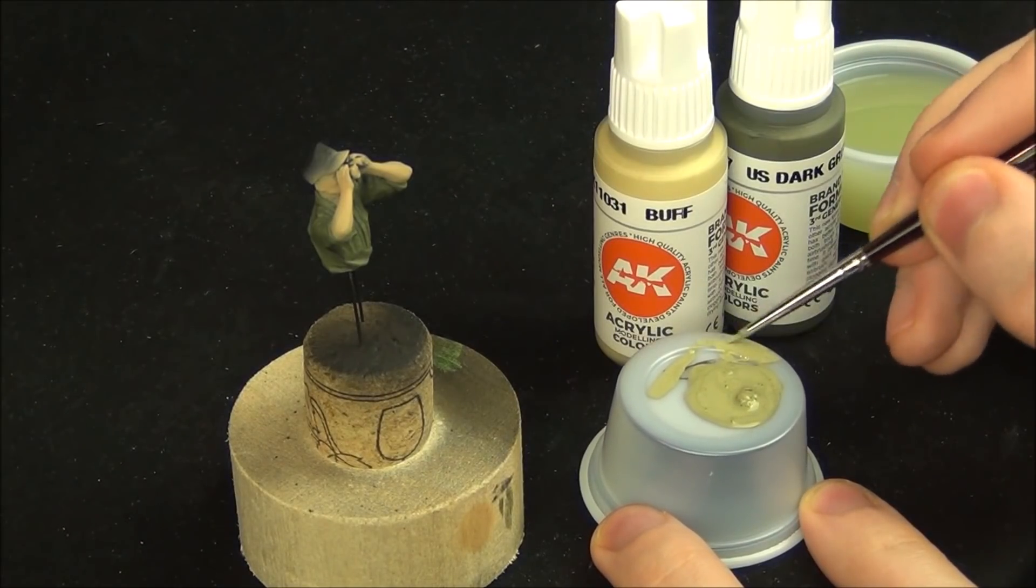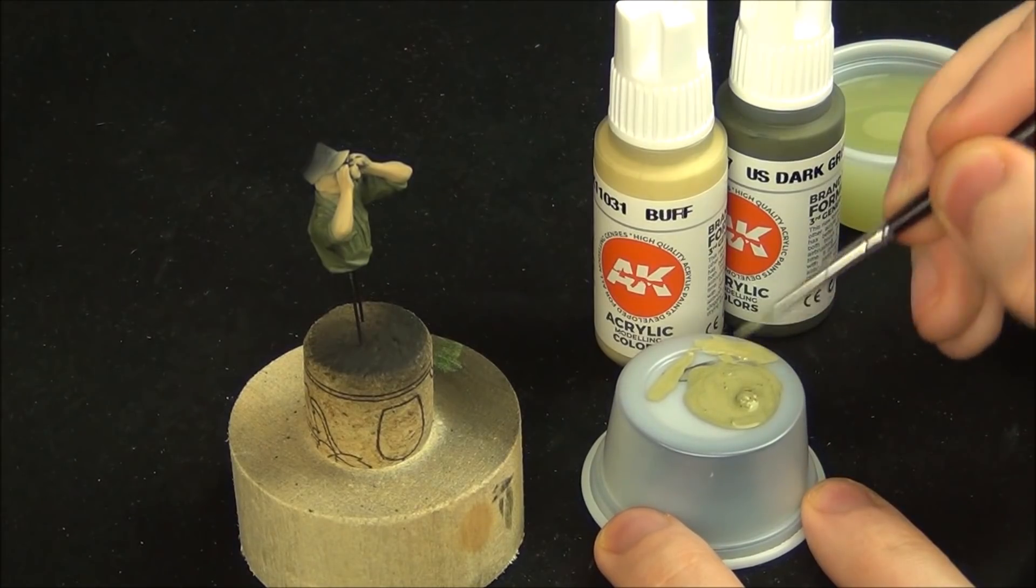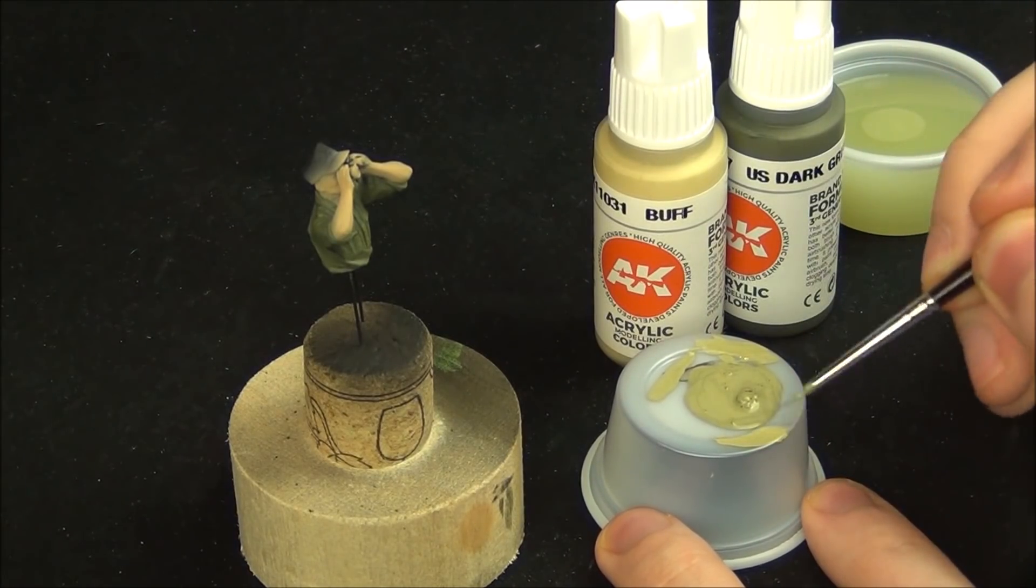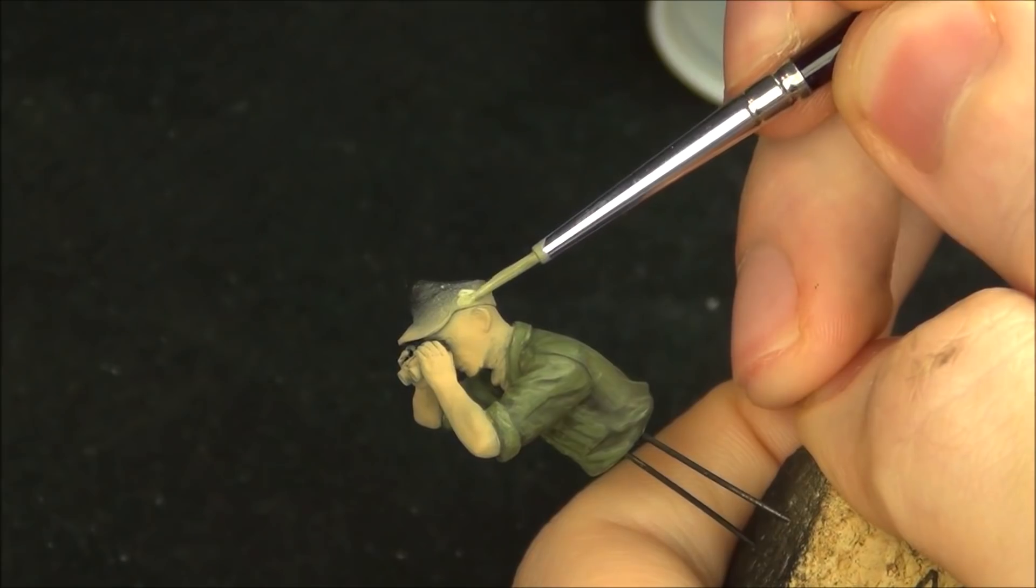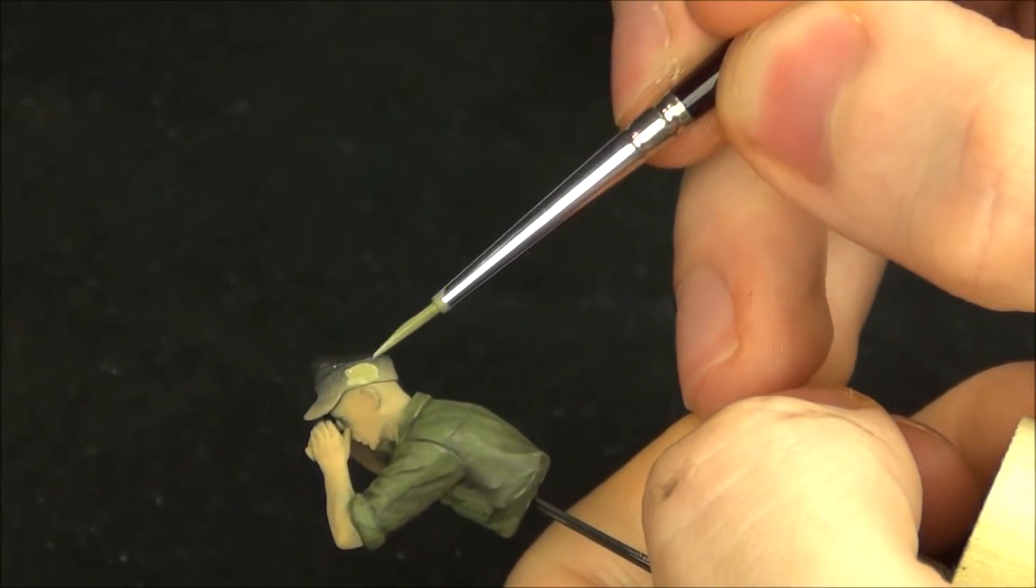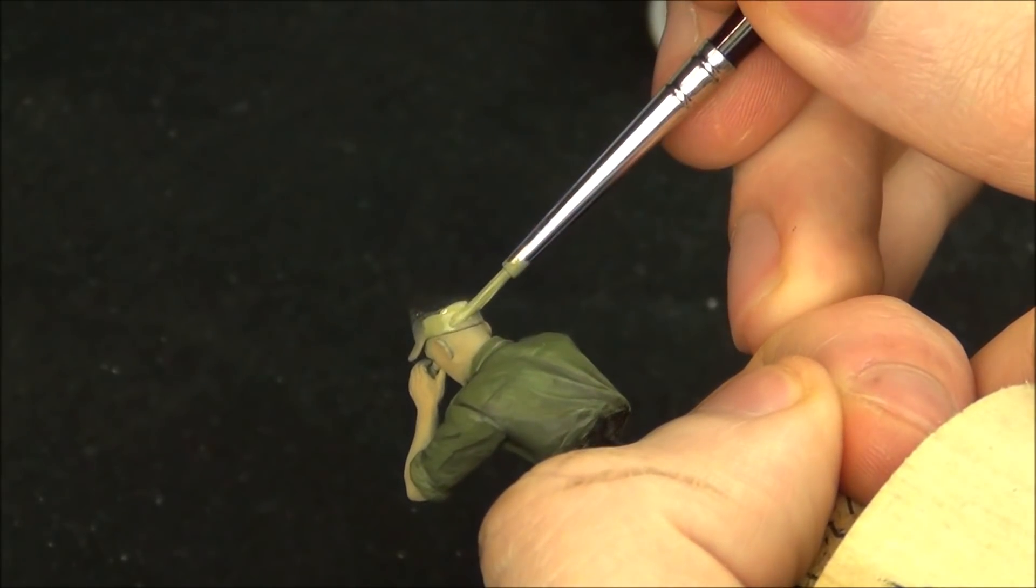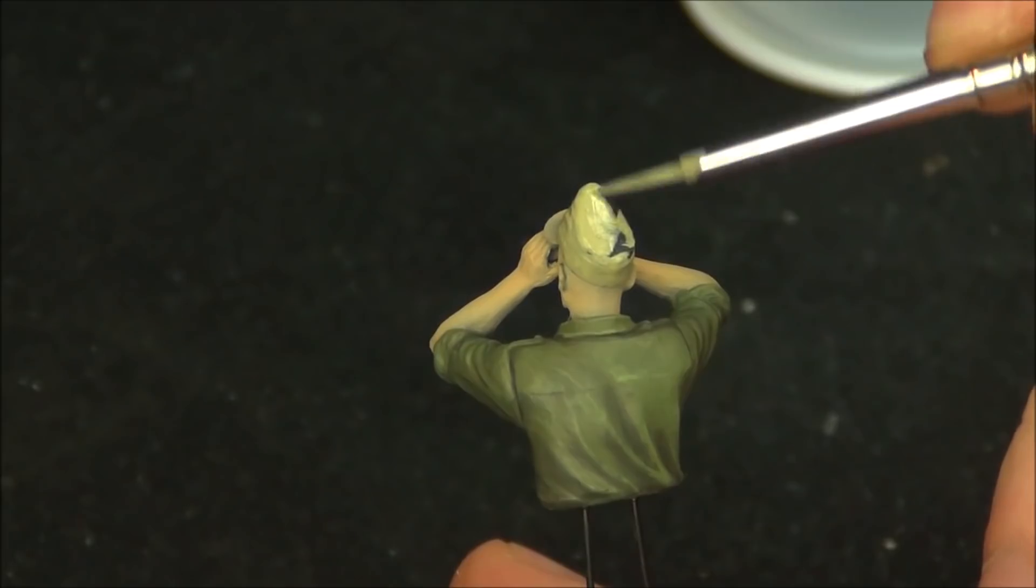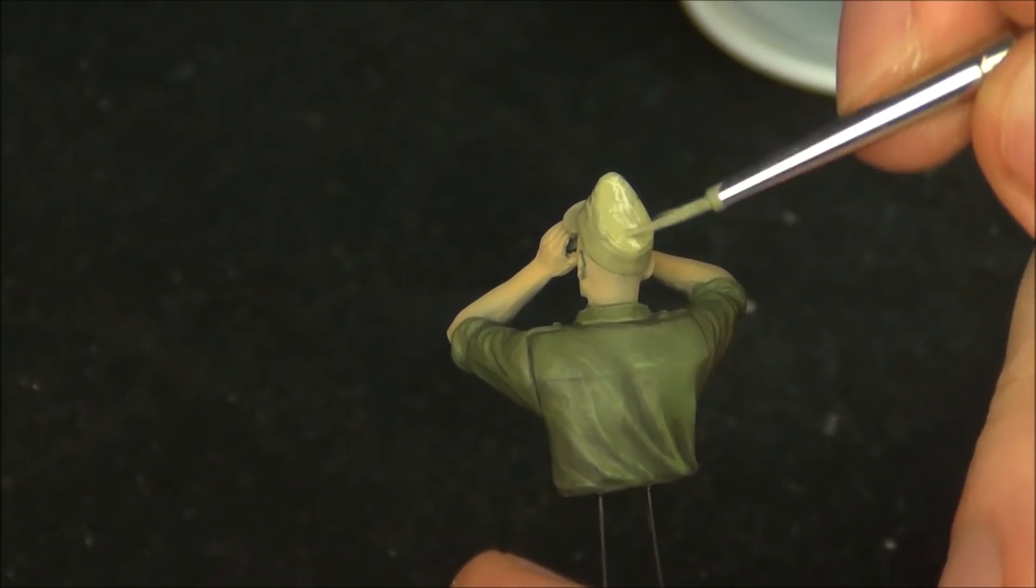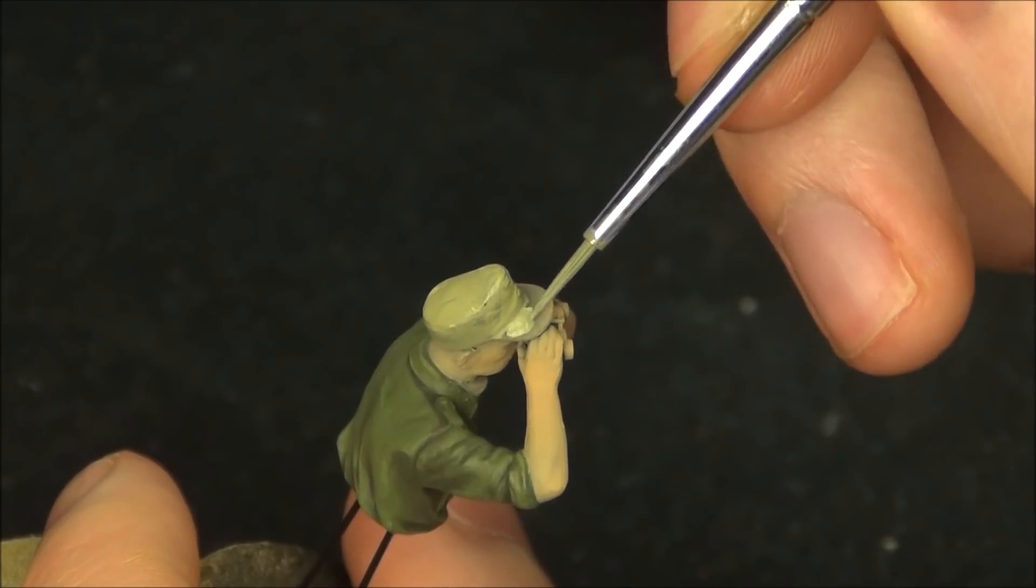With the shirt done I now move on to the hat. My mixture was about equal parts of buff and US dark green, and then once again we're going to start with our base coat. Now I'm not sure if my uniform is entirely historically accurate in how I painted it, but I'm doing my best here. So I'm picking a lighter color for the hat because that's what you sometimes see.